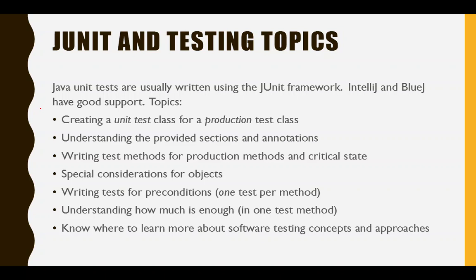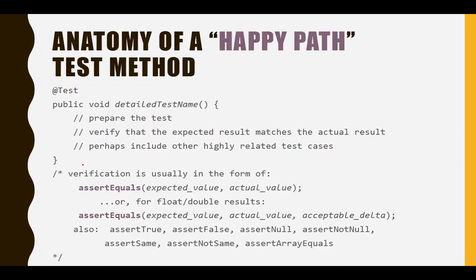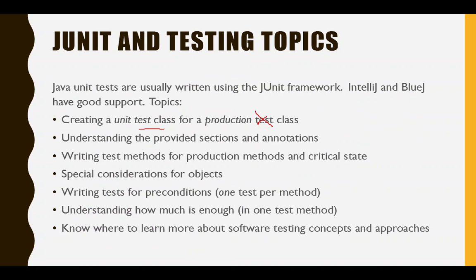The general idea is: for every production class, you're going to create a test class. Then for each method, you're going to write one test method. We're going to think about that and code a few of those things, so let's jump over and actually start coding.